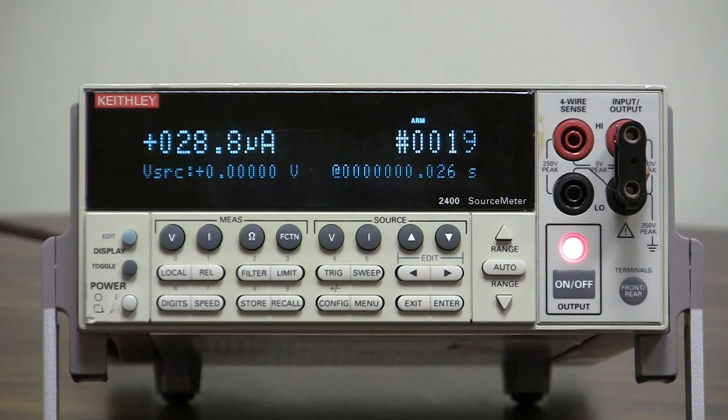So your voltage pulse is about one point something milliseconds. That's the fastest you can get from the front panel controls on a model 2400.